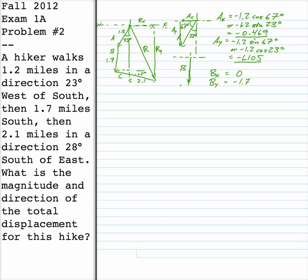Looking at the C vector now — it goes over making an angle of 28 degrees below the horizontal, or south of east. So Cx is positive: 2.1 times cosine 28, which equals positive 1.854. And Cy is negative: minus 2.1 sine 28, which equals minus 0.986.